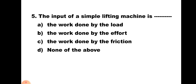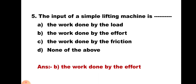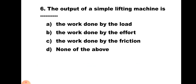Question number 5: The input of a simple lifting machine is — A) the work done by load, B) the work done by effort, C) the work done by friction, D) none of the above. When we apply the effort, the effort moves through some distance, and the work done by the effort is known as the input of the machine. Hence the correct answer is B) work done by the effort.